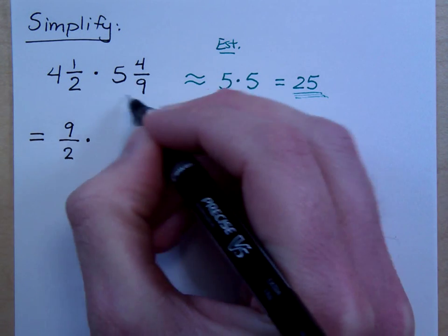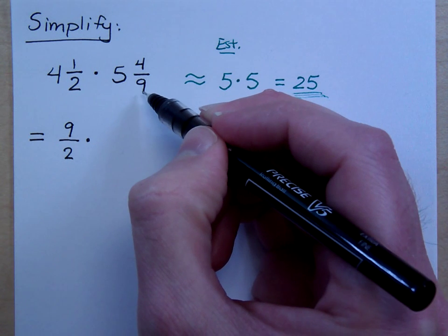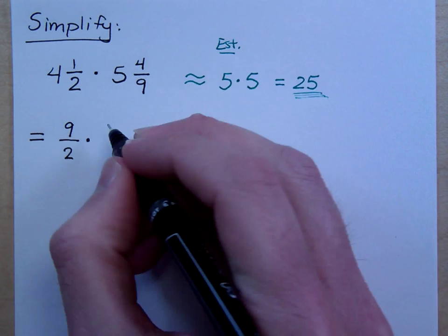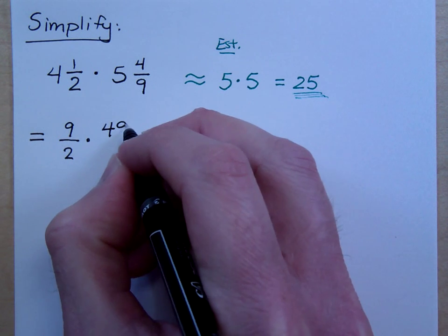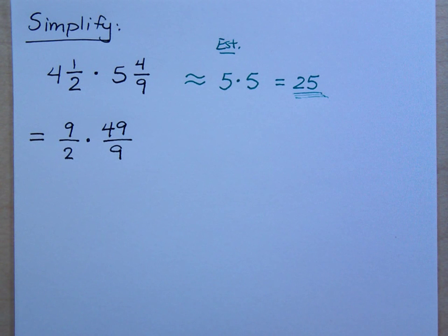Times, what about this fraction over here? What happens? 9 times 5 is 45, plus 4 is 49. So 49 ninths. Do you all agree? Okay. Now, you know that before I multiply all of this, I should reduce if I can. Are there any common factors between the numerators and the denominators? Right there, the 9s are yelling at you to reduce them.